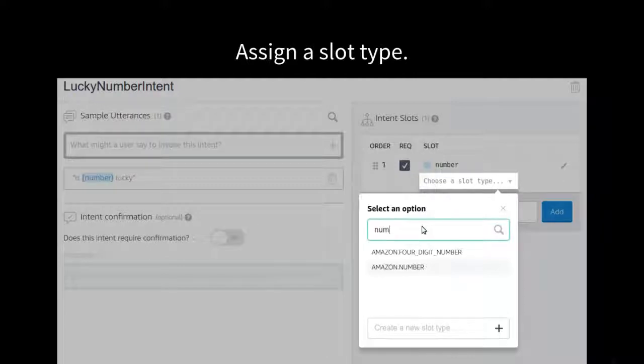One way it can help is by assigning it a slot type. It helps Alexa figure out what the person said. If it knows it's looking for a number, it's easier to figure out. It understands the context. Think about when you're having a conversation with someone. The context helps a lot to understand what they're saying if it's a loud environment or a lot of people are talking around you.